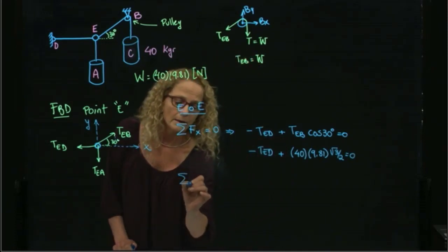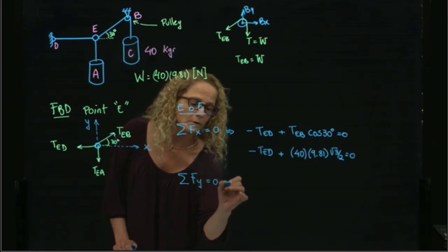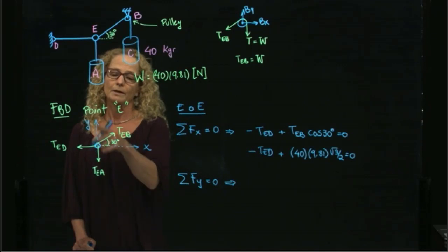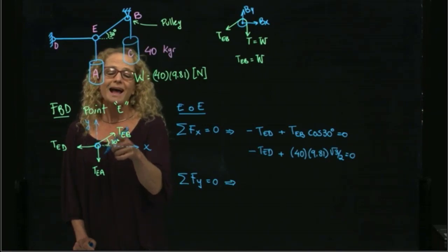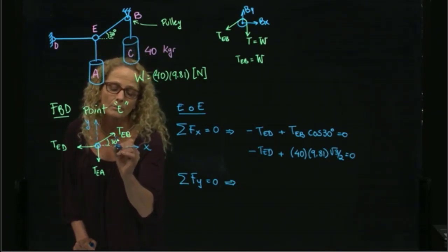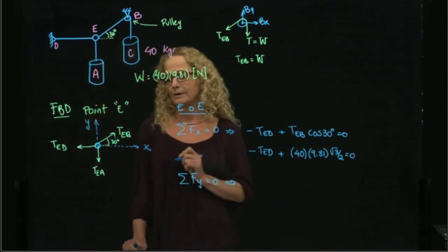And then I have the y equals to zero, and that gives me the next equation. The next equation, so we have here in y direction, we have this component times sine of T Eb, right? because we have this force, and we want the y component, which is the opposite to that triangle, right?